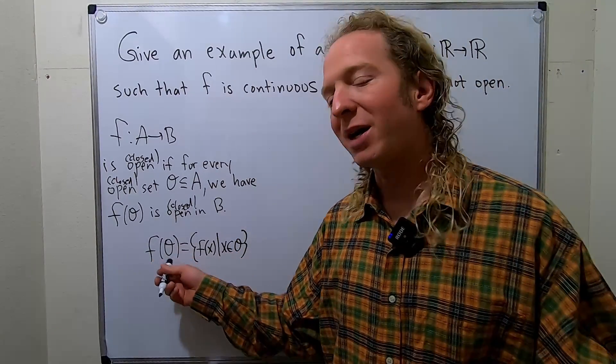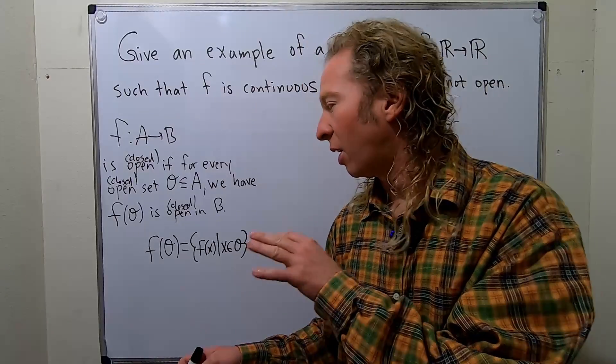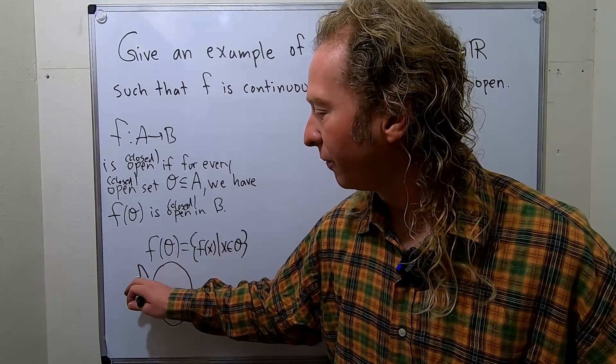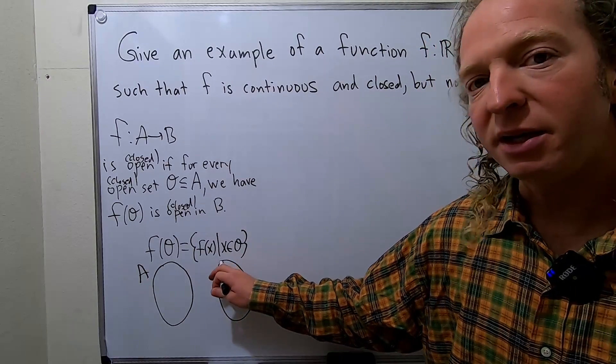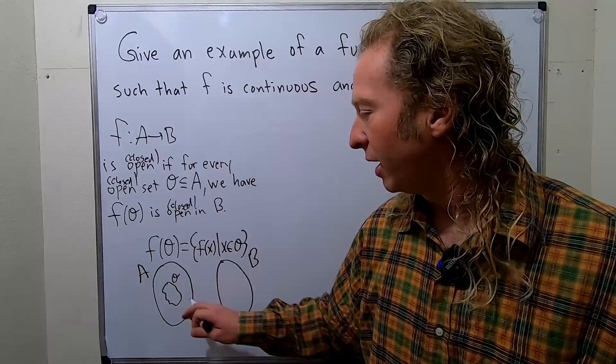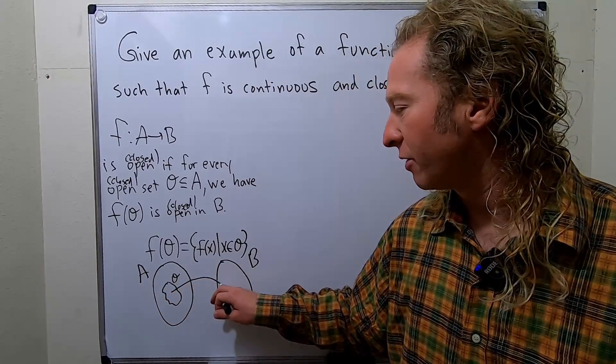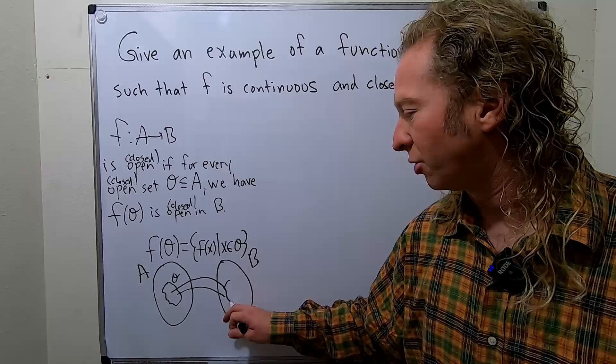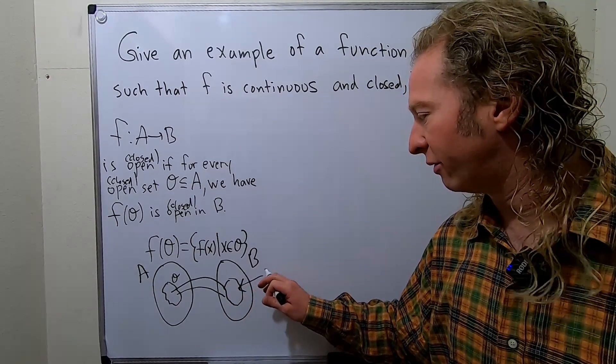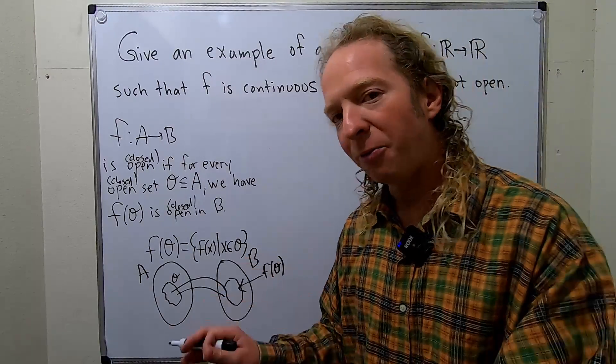Okay, this is called the direct image or the image of o under f. So if you have, say, a here, and you have, say, b here, then this would be your o. Okay, and then all of the elements in o get mapped to another set, which I'll draw here. And this set here is the direct image of o under f. So it's f(o). Hope that made sense.